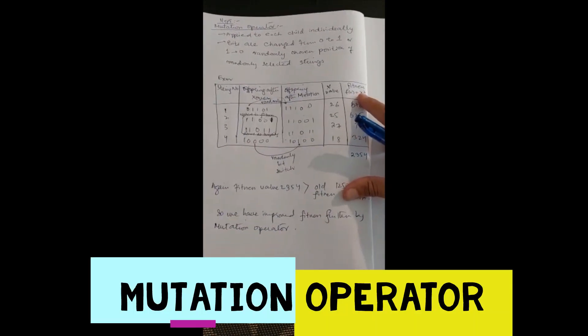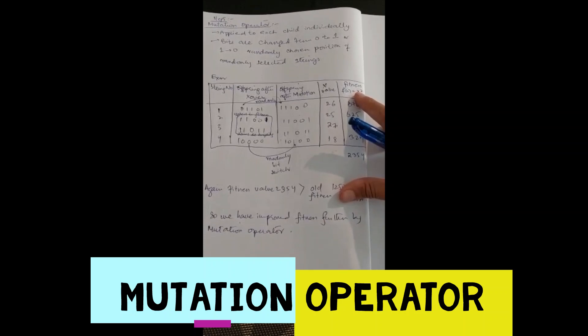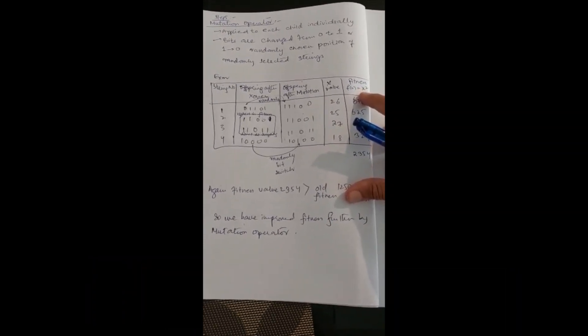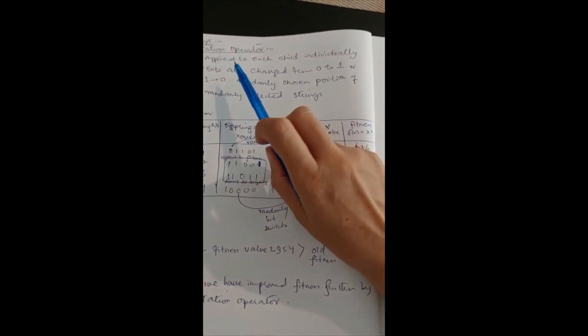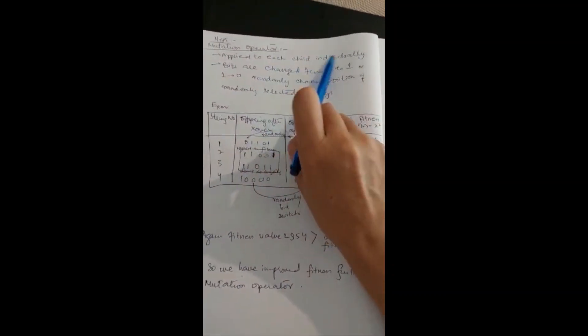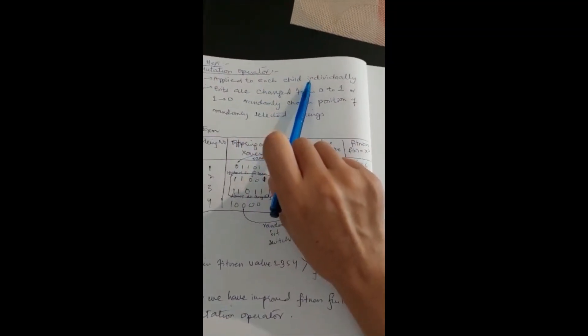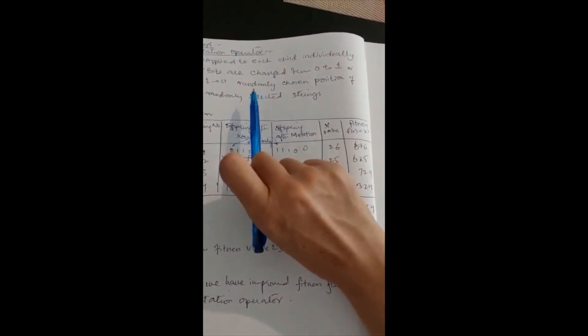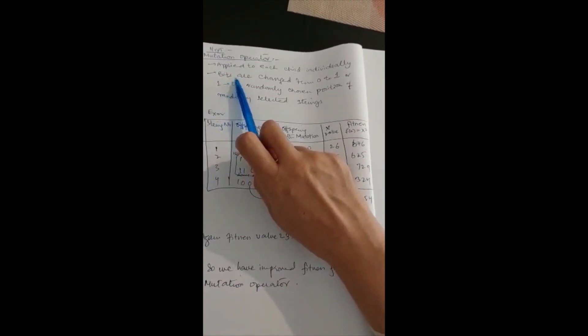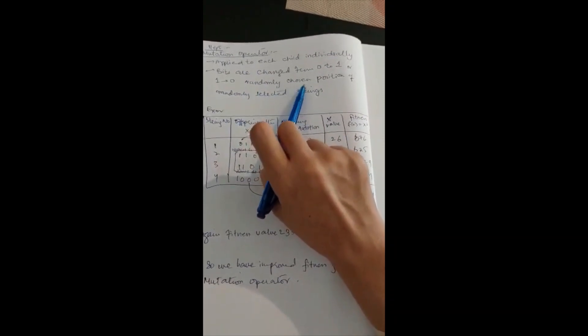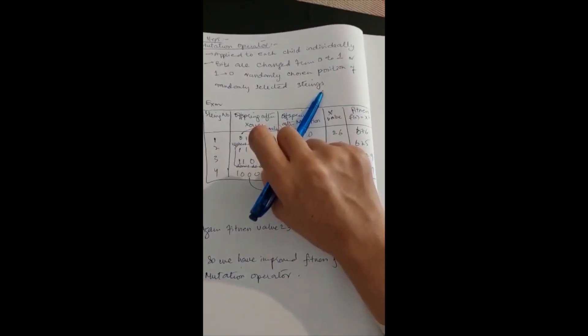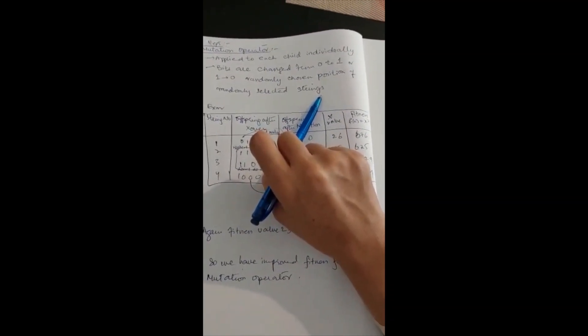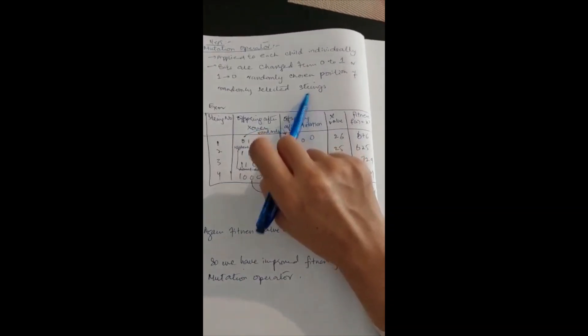There is a fifth thing that can be asked, which is called mutation. You can be asked to apply a mutation operator. You can be asked to apply mutation on each child individually or on a single child. It depends on what question applied. In mutation, bits are changed from 0 to 1 or 1 to 0, randomly chosen position of randomly selected strings. You have to randomly choose which bit. It's all random selection.